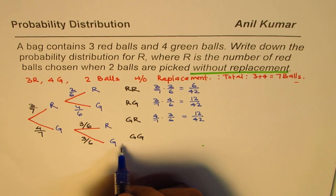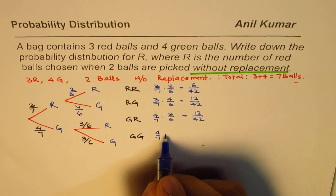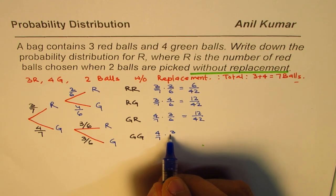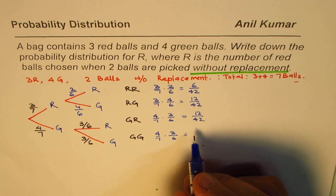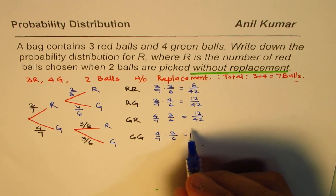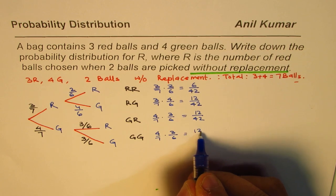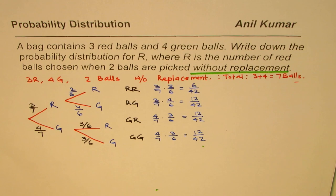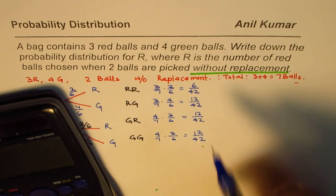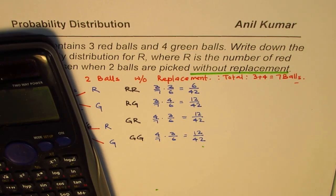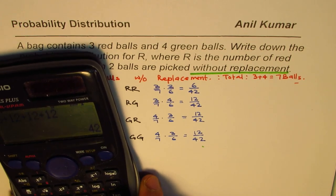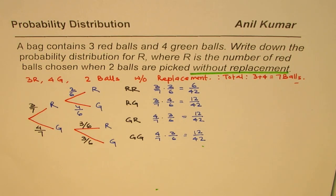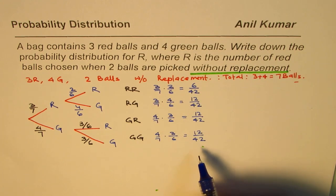The last combination, two green balls, is four over seven times three over six, which is again 12 over 42. These are the probabilities. Let's check: adding the numerators, six plus 12 plus 12 plus 12 equals 42, so the probability adds up to one. The answer is correct.